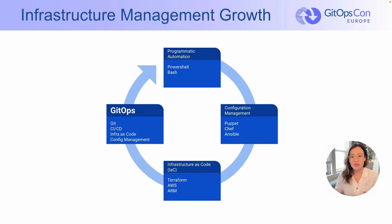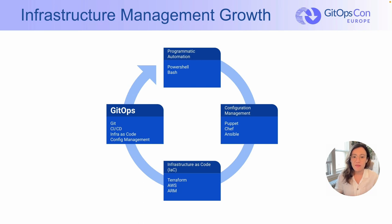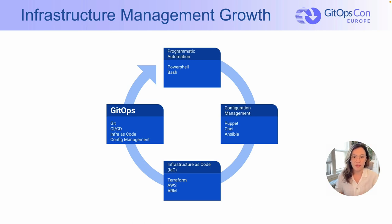So the infrastructure management growth. We start off with programmatic automation — this includes things like PowerShell. And then we evolve into configuration management, infrastructure as code, and then GitOps. GitOps is becoming an essential part of the cloud operating model. It promotes DevOps best practices to management infrastructure, improving the speed and quality of your infrastructure service delivery, and maturing infrastructure operations — driving everything from definitions stored in version-controlled repositories, essentially your source of truth.